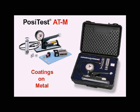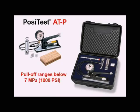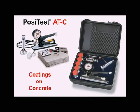A higher resolution P model is available for expected pull-off ranges below 7 MPa. For masonry substrates such as concrete, the 50 mm dolly available with the C model is preferred.